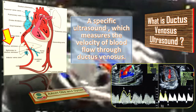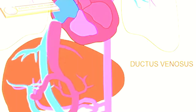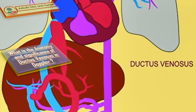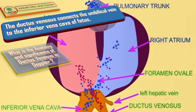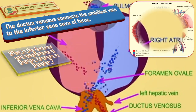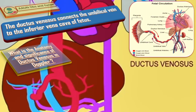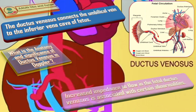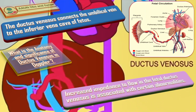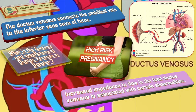The ductus venosus allows the oxygenated and nutrient-rich venous blood to flow from the placenta to the myocardium and brain. The ductus venosus is a vein which connects the umbilical vein to the inferior vena cava of the fetus, meaning this vein allows the fetal circulation to bypass the liver. Increased impedance to flow in the fetal ductus venosus is associated with certain abnormalities like aneuploidy, cardiac defects, and other adverse pregnancy outcomes.